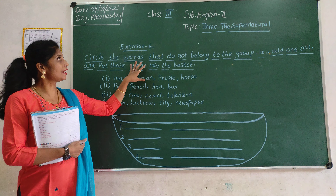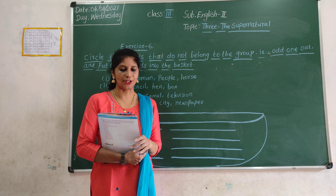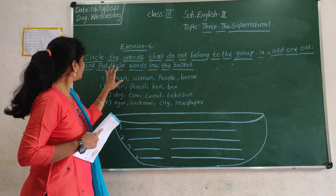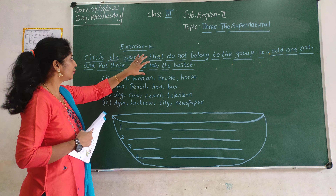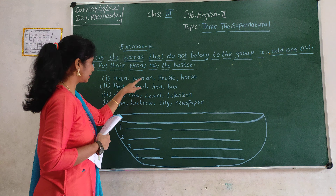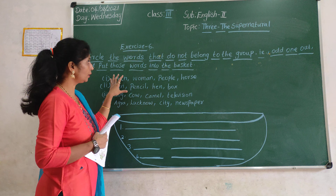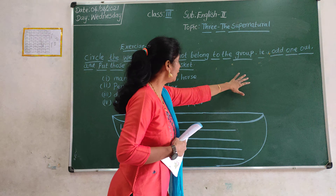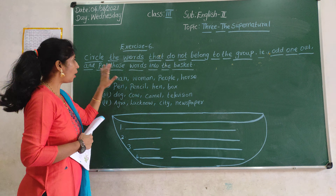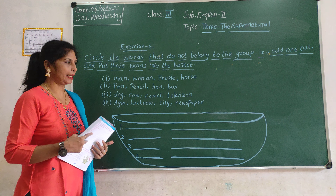Hi children, welcome to the Australian Subject English, Topic 3: the Super Matcher. Take a diagram and look at page number 5. Circle the words that do not belong to the group, and put those words into the basket.